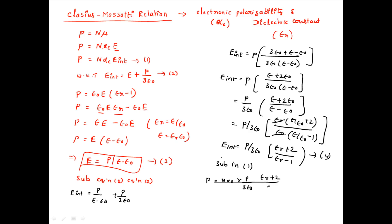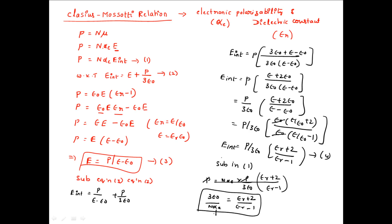Substituting, P equals n times alpha_E times P divided by 3 epsilon_naught times (epsilon_r plus 2) divided by (epsilon_r minus 1). P cancels from both sides, and by cross multiplication we get 3 epsilon_naught divided by n times alpha_E equals (epsilon_r plus 2) divided by (epsilon_r minus 1). This is the relation between electronic polarizability and dielectric constant, and it is called the Clausius-Mossotti relation. I hope you understand this video. Thank you.